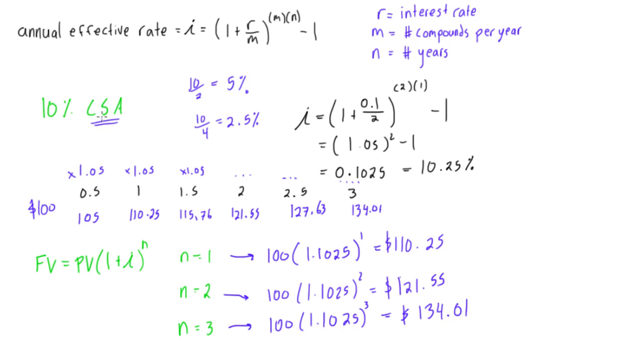if we were compounding quarterly, we'd be multiplying by 2.5% each time instead of 5%, but it would be four times a year instead of twice a year.